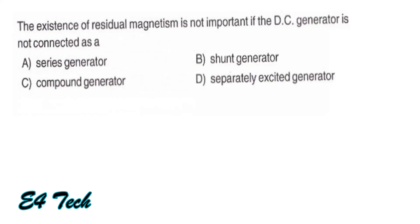The existence of residual magnetism is not important if the DC generator is connected as a separately excited generator. In a self-excited generator, the residual magnetism is responsible for building up voltage. However, in a separately excited generator, residual magnetism is not important. That is option D.